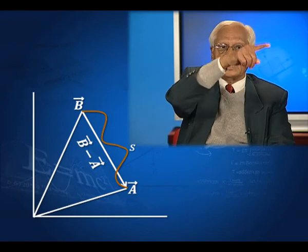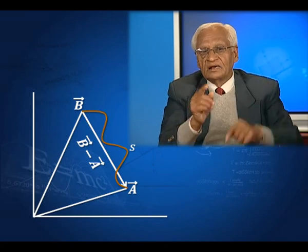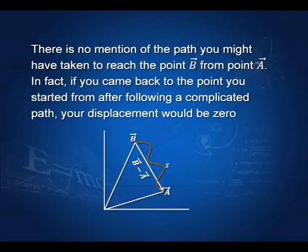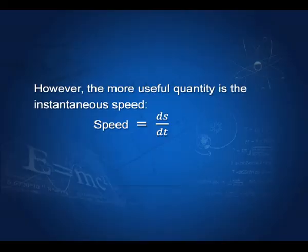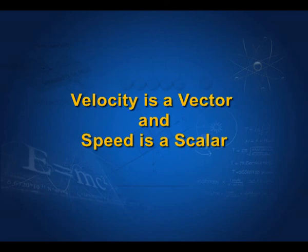In ordinary life, we do not use velocity very much; we are used to the term speed. And what is speed? The path for displacement does not matter, but if we measure the length along the path and denote it by small s, then the speed would be the total distance travelled divided by the total time taken — that is s by t. That is the average speed. If we take small distance and small time, we get instantaneous speed ds by dt, where small s denotes the distance travelled. Since ds is not a vector — it is a scalar, the distance travelled — speed is a scalar. Velocity is a vector; speed is a scalar.